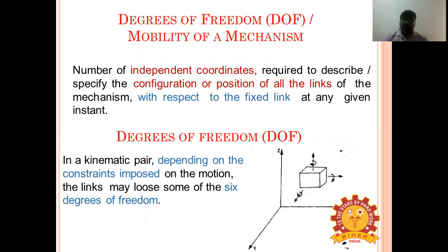Degrees of freedom, otherwise called mobility of a mechanism, is the number of independent coordinates required to specify the configuration or position of all links of a mechanism with respect to the fixed link at any given instance. Mobility is defined as the number of input parameters which must be controlled independently to bring the device into a particular position.